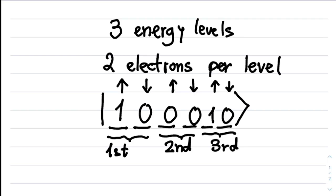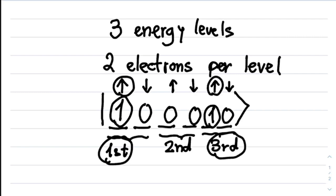What would this mean? It would mean that there is one electron with spin up in the first energy level, and one electron with spin up in the third energy levels. And those are the electrons that we have in our molecule.